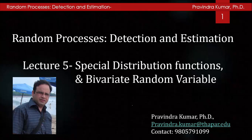Welcome to the lecture series of Random Processes Detection and Estimation. This is the fifth lecture of this series. In the previous lecture, we discussed Discrete Probability Distribution Functions including Bernoulli distribution, binomial distribution, and Poisson distribution. We also discussed Continuous Distribution Functions: Uniform Distribution, Exponential Distribution, and Normal Distribution. We also discussed Binomial Probability Sum with Table and Poisson Probability Sum with Table.